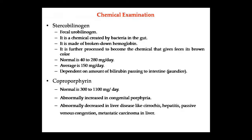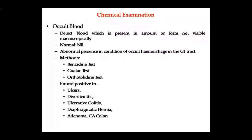Next, fecal urobilinogen (stercobilinogen) is created in the gut by bacteria from hemoglobin. After processing, stercobilinogen provides the brown color of stool. Normally, 40–280 mg per day is present, depending on the amount of bilirubin passing into the intestine. In jaundice, the amount of stercobilinogen will depend on bilirubin levels. If it is less than normal, this can indicate certain conditions.